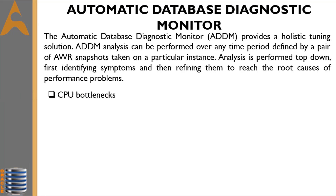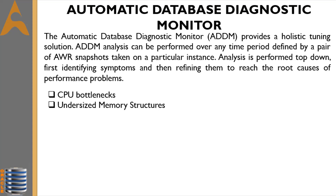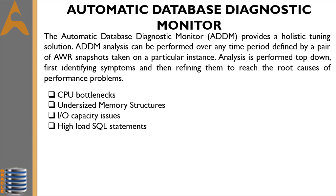The problems reported by ADDM are sorted by the amount of DB time they are responsible for. System areas not responsible for a significant portion of DB time are reported as non-problem areas. The types of problems that ADDM considers include: CPU bottlenecks — is the system CPU-bound by Oracle or some other application; undersized memory structures — are the Oracle memory structures such as the SGA, PGA, and buffer cache adequately sized; and I/O capacity issues.